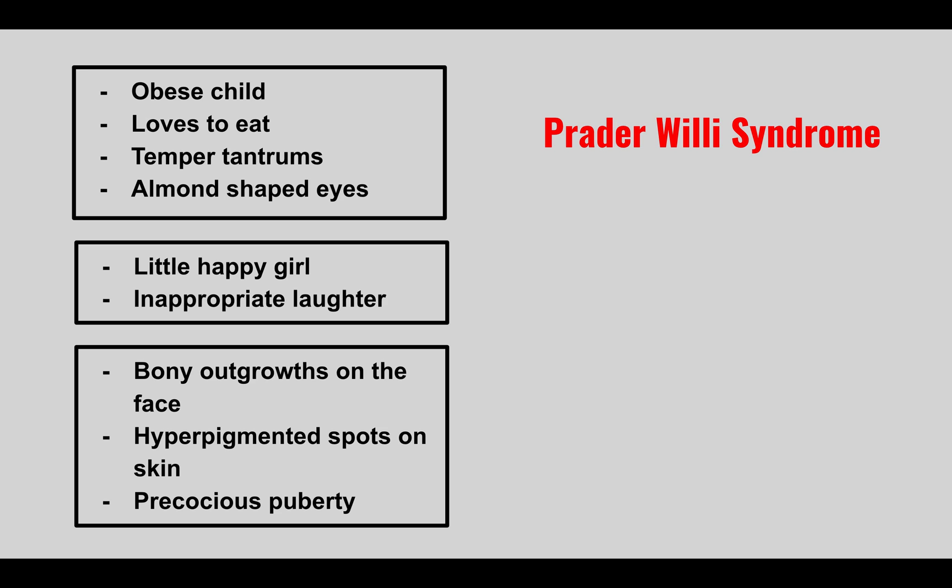The next condition, often compared to Prader-Willi, is a happy girl with inappropriate laughter. This is Angelman syndrome — similar to Prader-Willi, except it's the mother's deletion of chromosome 15 or paternal uniparental disomy. These are really important to know.